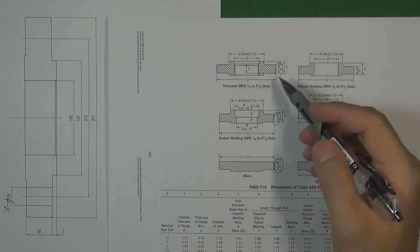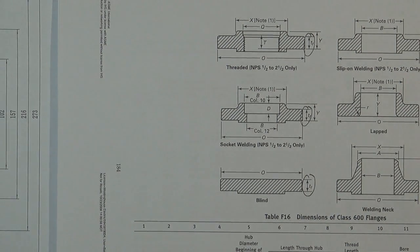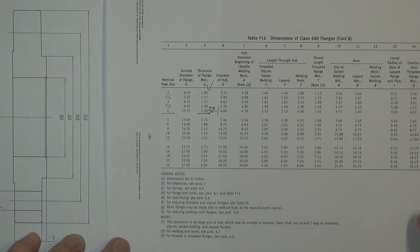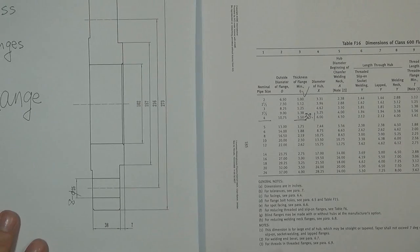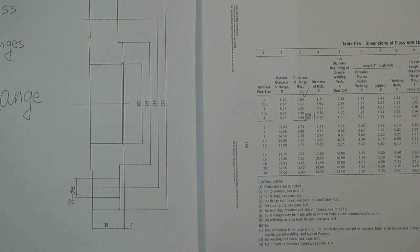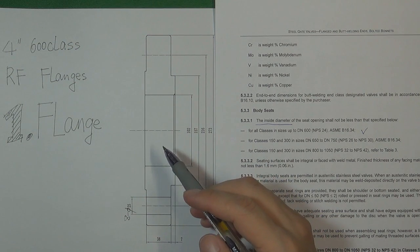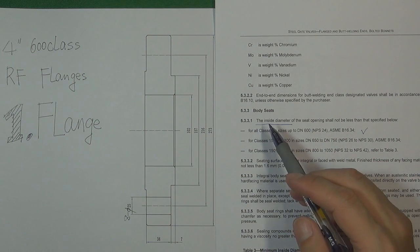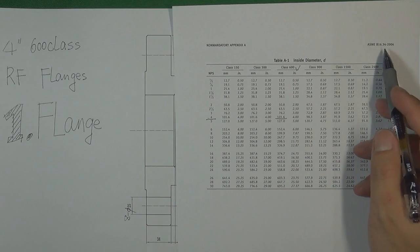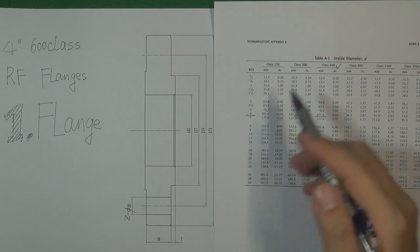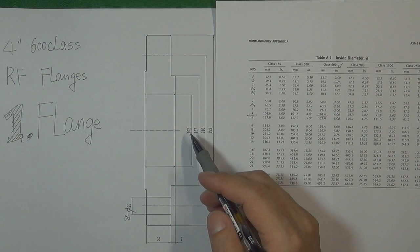The next dimension is for the flange thickness. According to this standard, we use TF to represent flange thickness. According to the table for 600 pressure class, 4-inch flange, the flange thickness is approximately 38 mm. So we're going to use 38 mm to design this flange. The last dimension is the flange inside diameter, which is also the valve body inside diameter. According to API 600, the valve body inside diameter comes from ASME B16.34. For a 4-inch valve at 600 pressure class, the valve inside diameter is approximately 102 mm. So we're going to use 102 mm for the flange inside diameter.